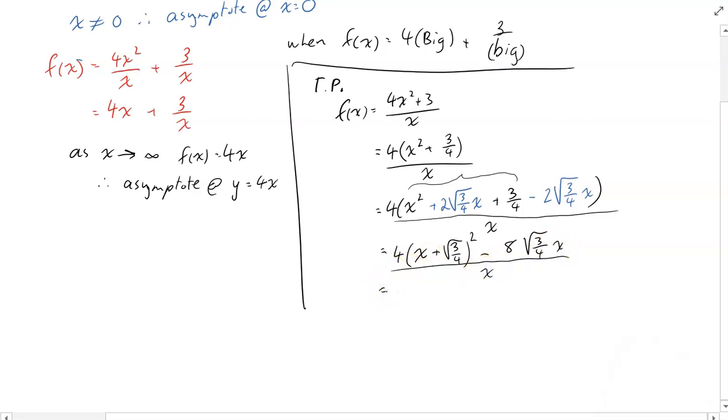Now if I split it up, I'll get 4 x plus root 3 on 4 squared over x. And then this bit minus 8 root 3 on 4x divided by x will be just minus 8 root 3 on 4. Why have we done all of this? Because doing this allows us to come up with a minimum and a maximum value or a local minimum and a local maximum.